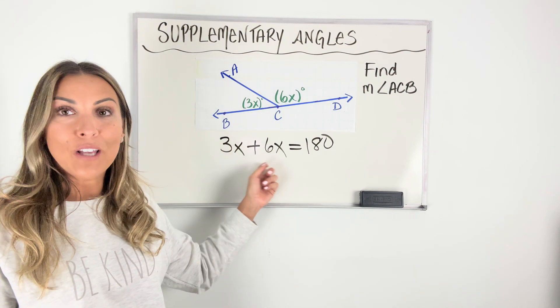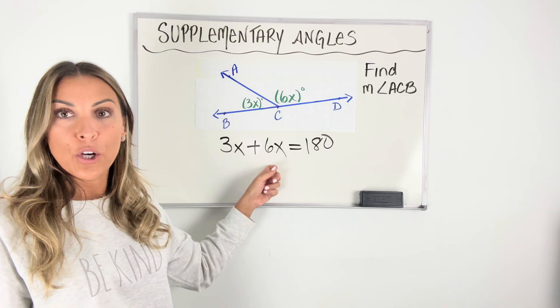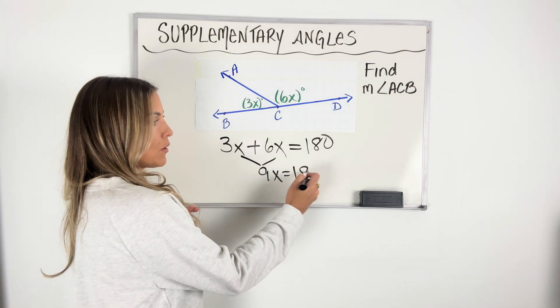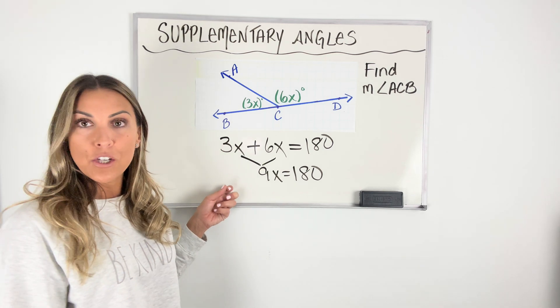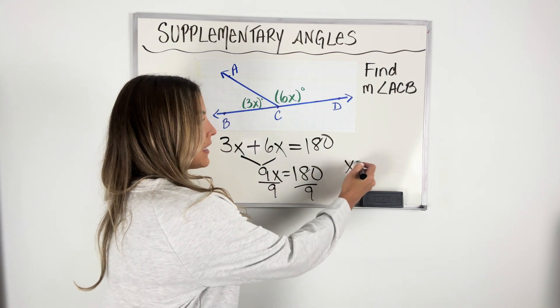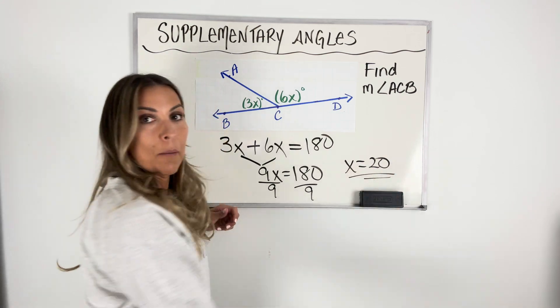So now we just need to solve this equation. I see like terms, so I'm going to combine them. 3X plus 6X is 9X. So now I have 9X equals 180. One step equation, I'm going to divide by 9 on both sides to get X is equal to 20. Now be careful.